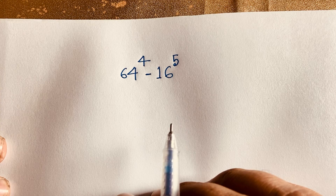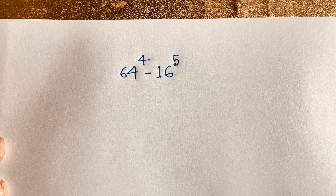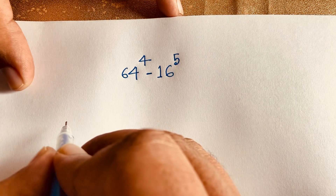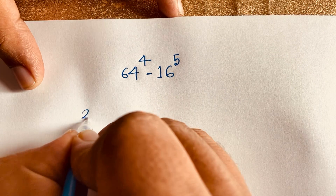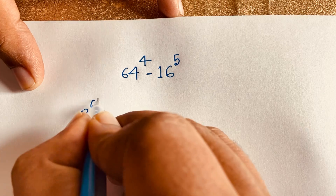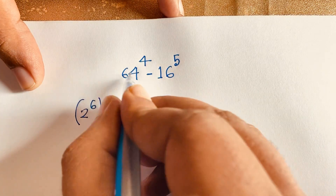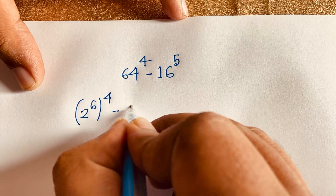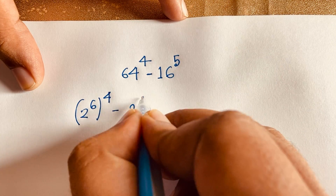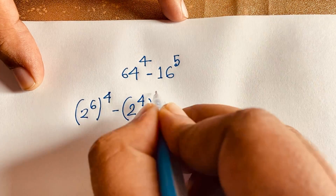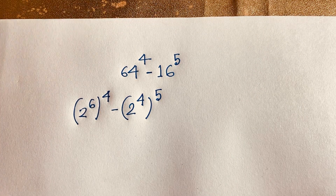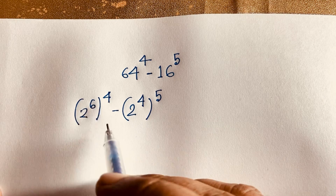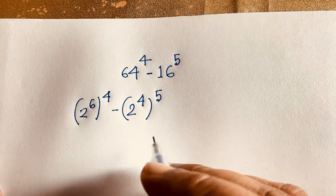Here is 64 — we know that 64 equals 2 to the power 6. So we have 2 to the power 6, whole to the power 4, minus 16, which equals 2 to the power 4, whole to the power 5. Now, 4 times 6 equals 24, and 4 times 5 equals 20.